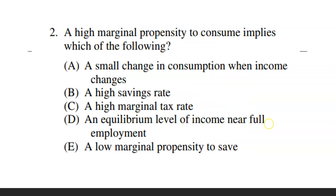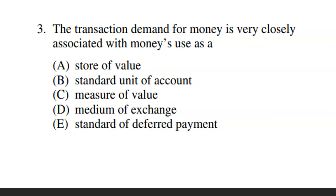The best answer is B. Question 2: Remember there are only two things you can do with money — spend it or save it. We use the MPC and MPS to calculate the spending multiplier. If the government spends extra money and people get that money, we know how much they're going to spend and save. If you have a high MPC — meaning people spend most of the extra money they get — they must have a low marginal propensity to save.